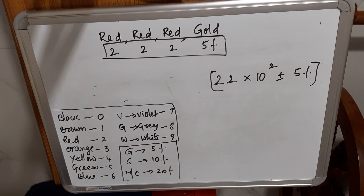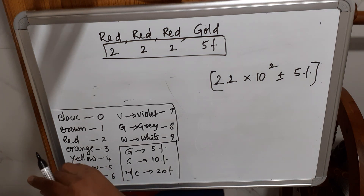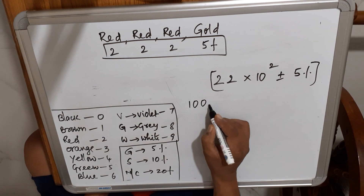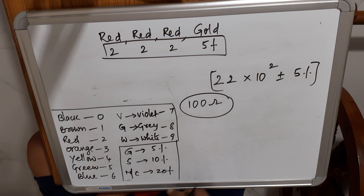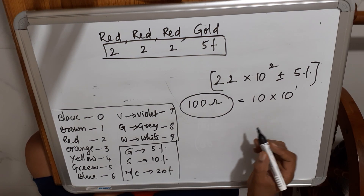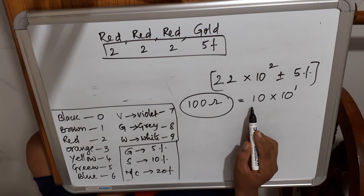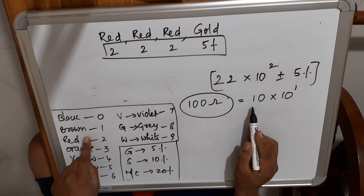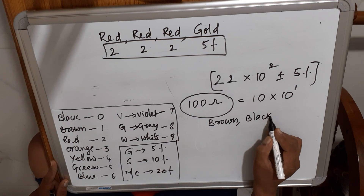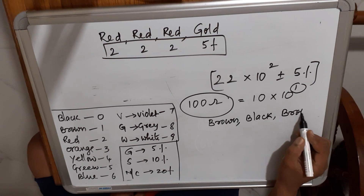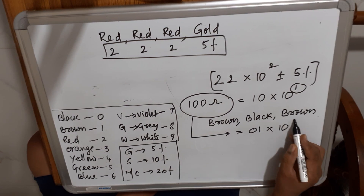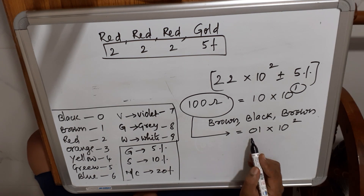The resistance is 22 × 10² ± 5% ohm. Now, what is the color sequence for 100 ohm? Write 100 ohm as 10 × 10¹. The first digit is 1 (Brown), second digit is 0 (Black), multiplier is 10¹ (Brown).